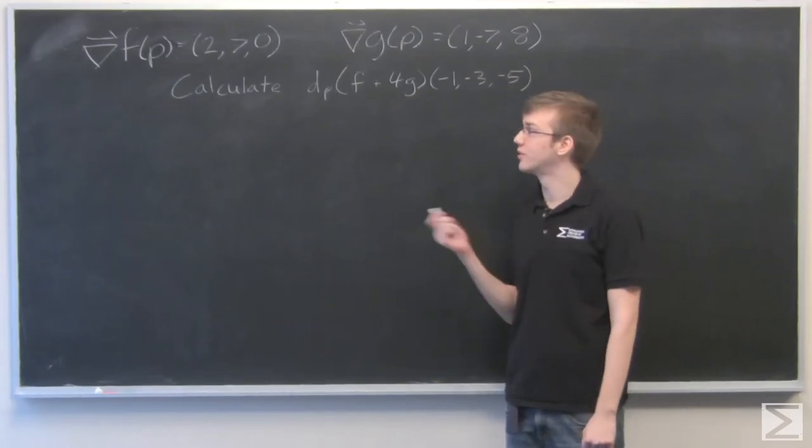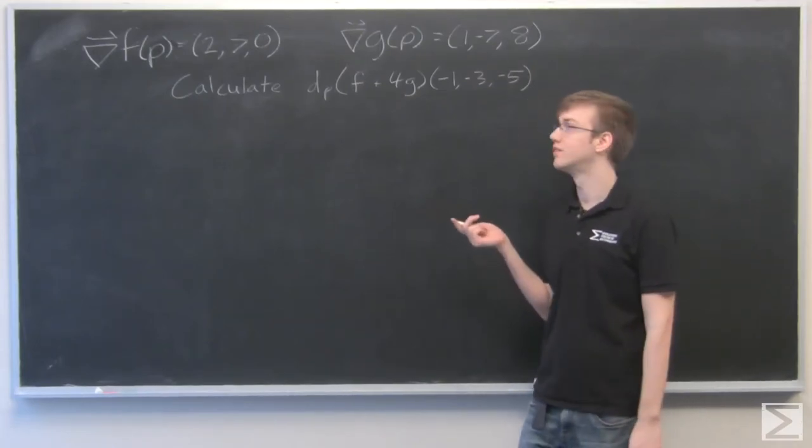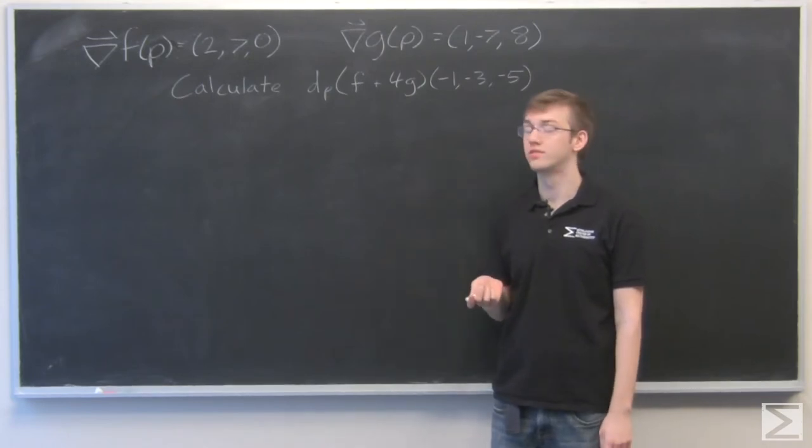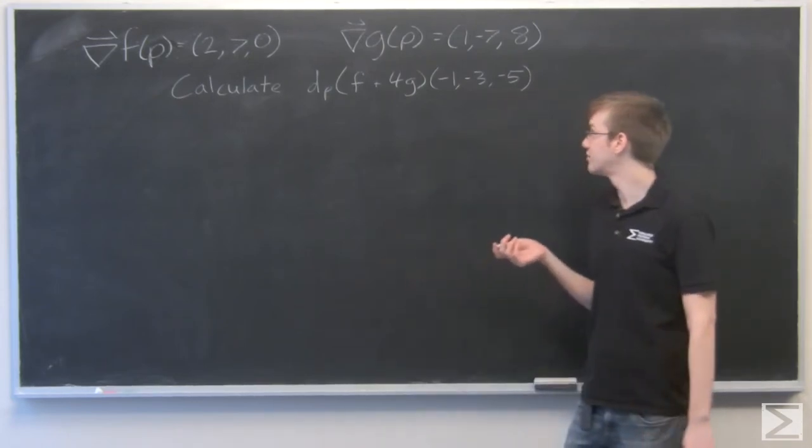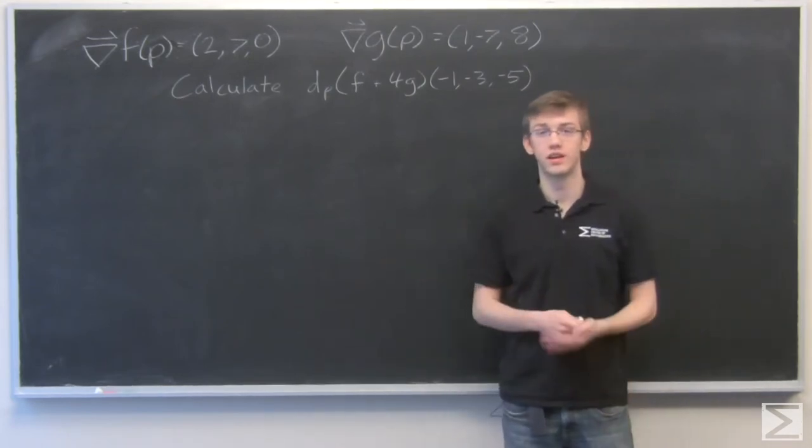So for this problem, we're given the gradient vector of f at p is equal to 2, 7, 0. And the gradient vector g at p is equal to 1, negative 7, 8.